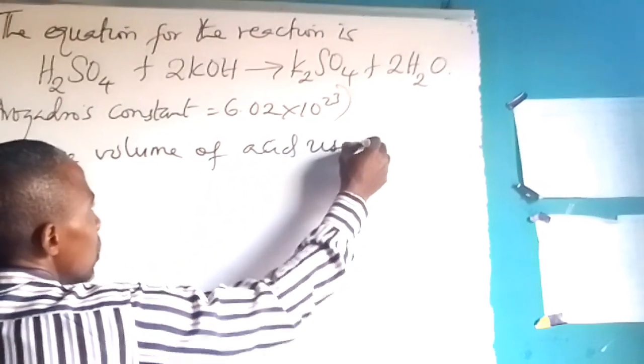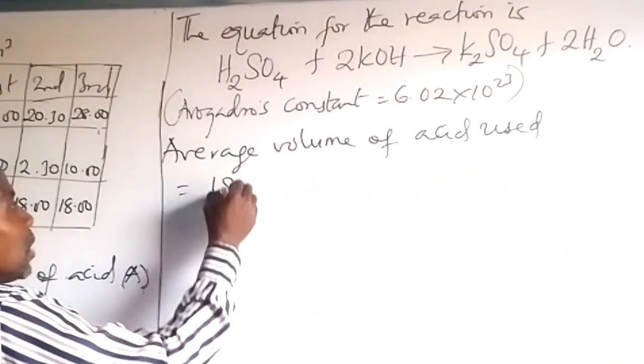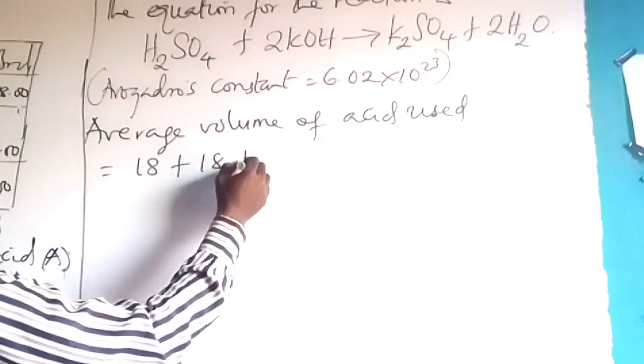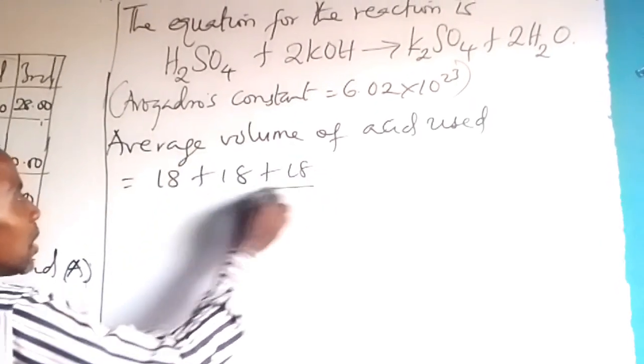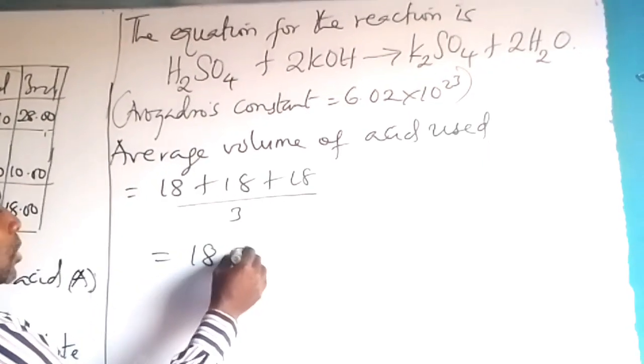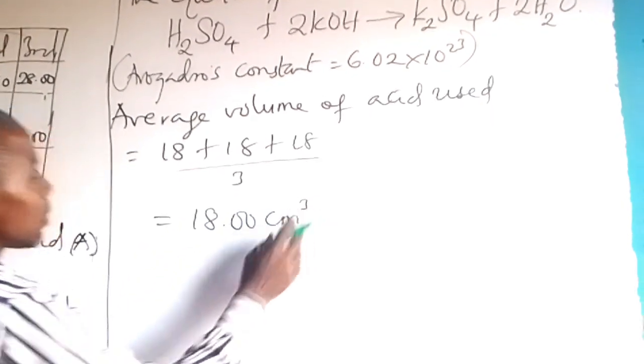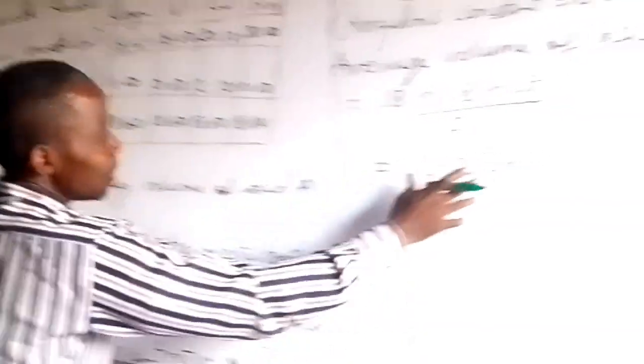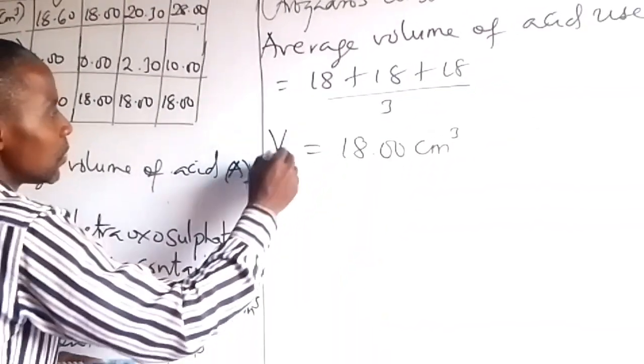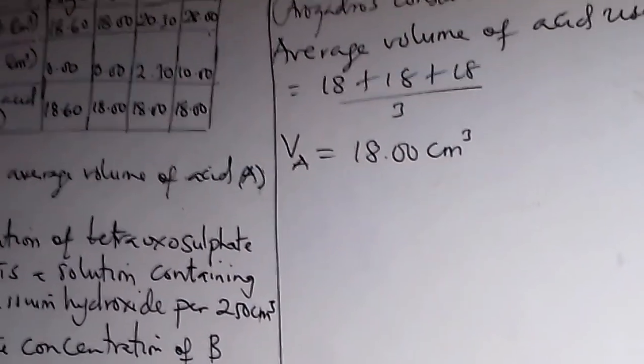So the average volume of acid used is 18.00 plus 18.00 plus 18.00. This will give you what? 18.00. This is average volume of acid used. That is VA. Call it VA. Now we have done the first one.